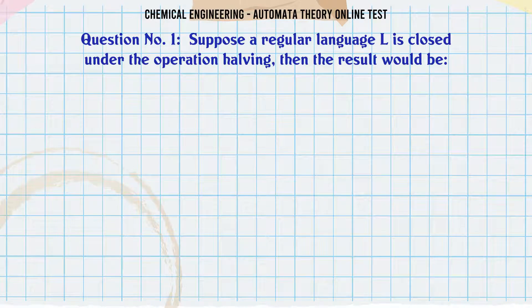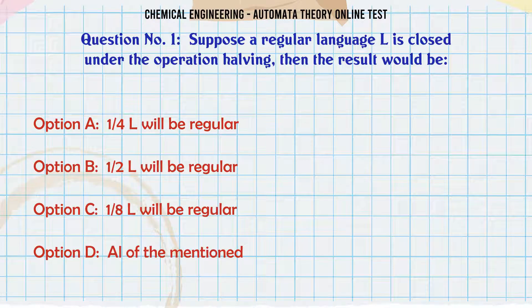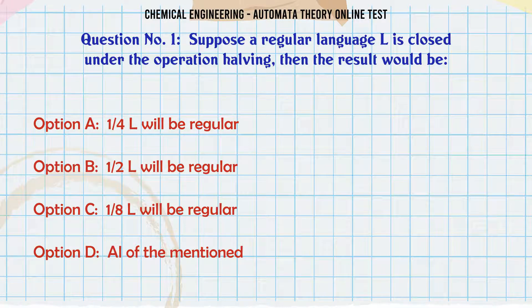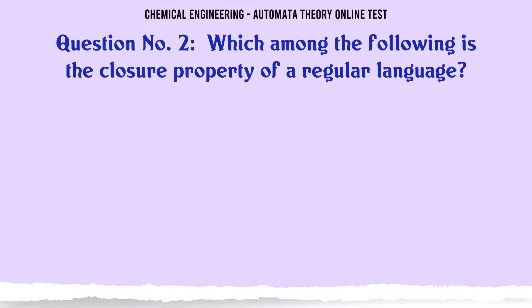Suppose a regular language L is closed under the operation halving. The correct answer is: L of the mentioned.